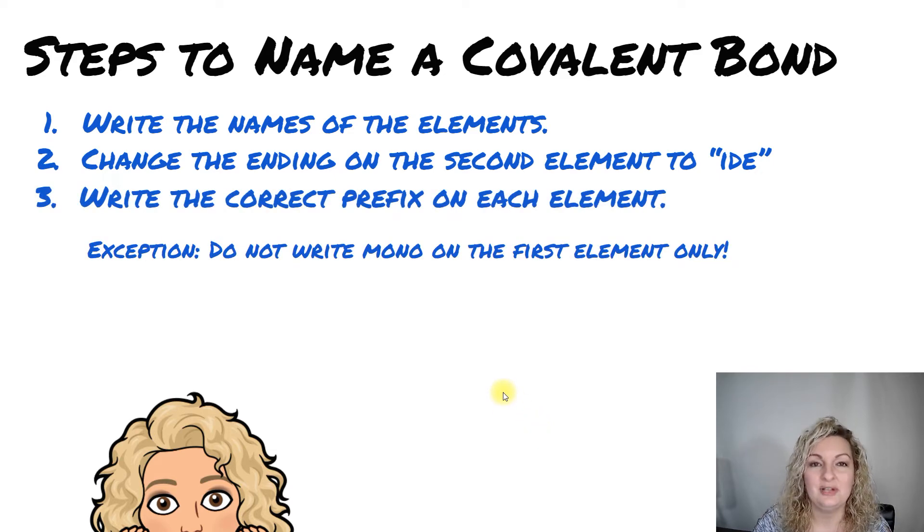And then three, you're going to write the correct prefixes, the Greek prefixes of each element. Now there's one exception to the rule and that is do not write mono on the first element only. So we can write mono on the second, just not the first element.